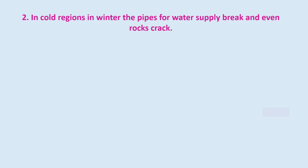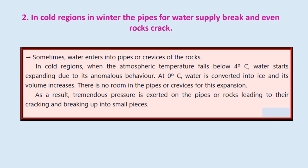In cold regions in winter, pipes for water supply break and even roads and rocks crack. Sometimes water enters into pipes or crevices of rocks. When atmospheric temperature falls below 4 degrees Celsius, water starts expanding instead of contracting due to anomalous behavior. At 0 degrees Celsius, water is converted into ice and its volume increases. There is no room in the pipes or crevices for this expansion, and as a result the tremendous pressure exerted on the pipes or rocks leads to cracking and breaking up into small pieces. This is all because of the anomalous expansion of water.